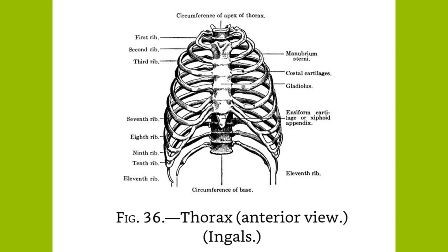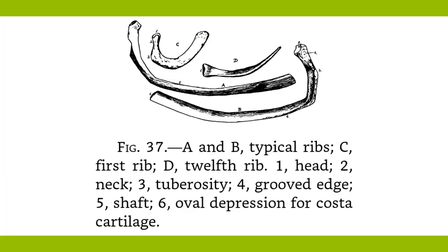The Ribs. The ribs are 24 in number, 12 on each side, of which the upper seven, which articulate with the sternum by individual cartilages, are called true ribs and the other five false ribs. Of the false ribs, the upper three articulate indirectly with the sternum through the seventh cartilage with which their cartilages unite, while the other two have their anterior extremities free and are called floating ribs.